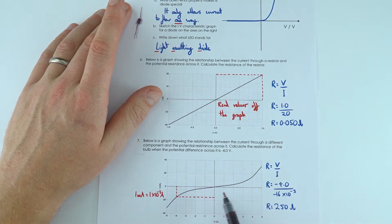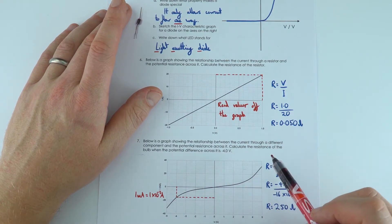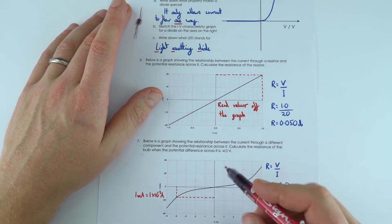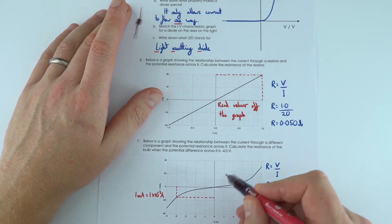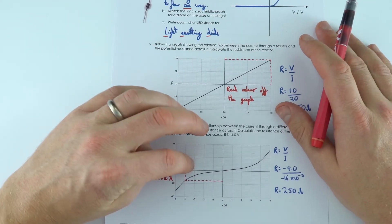But for the filament lamp, it's going to change. Or is it a filament lamp? No, this one's a different component. It's not a filament lamp, because actually a filament lamp has more of an S shape like this. Whatever this is, this kind of magical component,